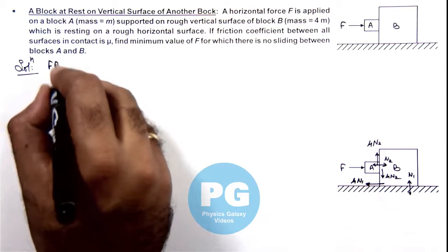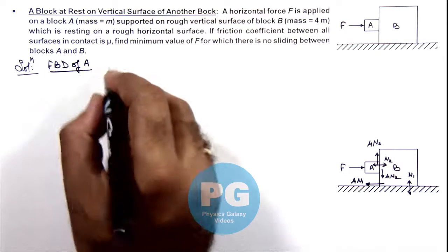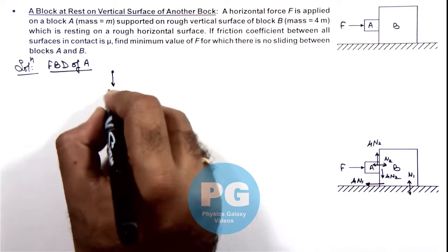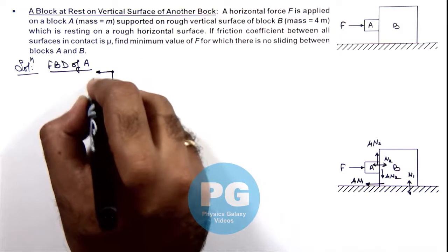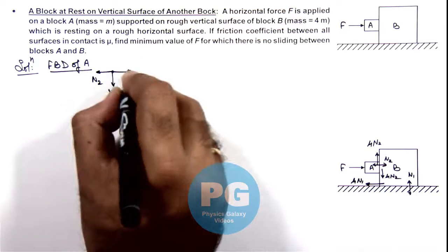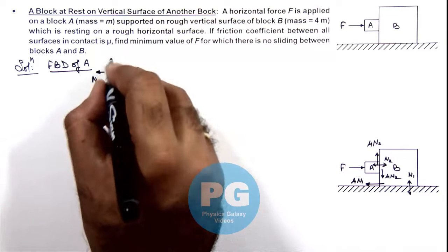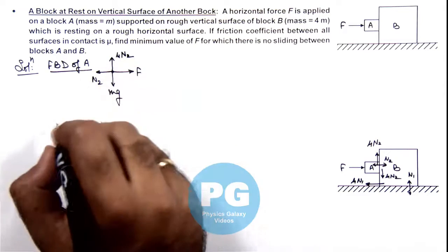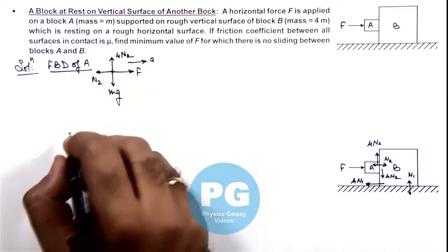Now in this situation if I draw the free body diagram of block A, here you can see in case of block A it is experiencing its weight mg in downward direction. A normal reaction N₂ is acting toward left and toward right the external force F is applied. In upward direction the only force is friction which is μN₂, and the block A we consider it is moving toward right with acceleration a.